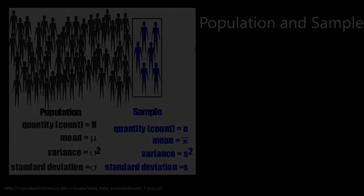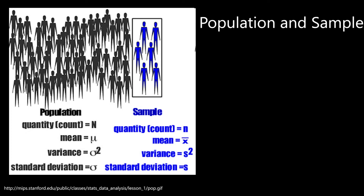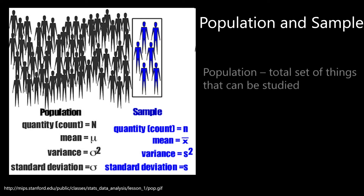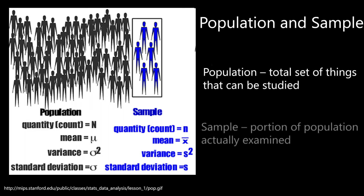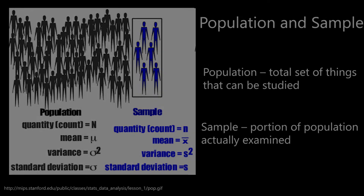Let's first review two core ideas from statistics: population and sample. A population is a total set of things that can be studied. A sample is the portion of the population that is actually examined. Often, thematic maps that show numerical information are based on a statistical sample.